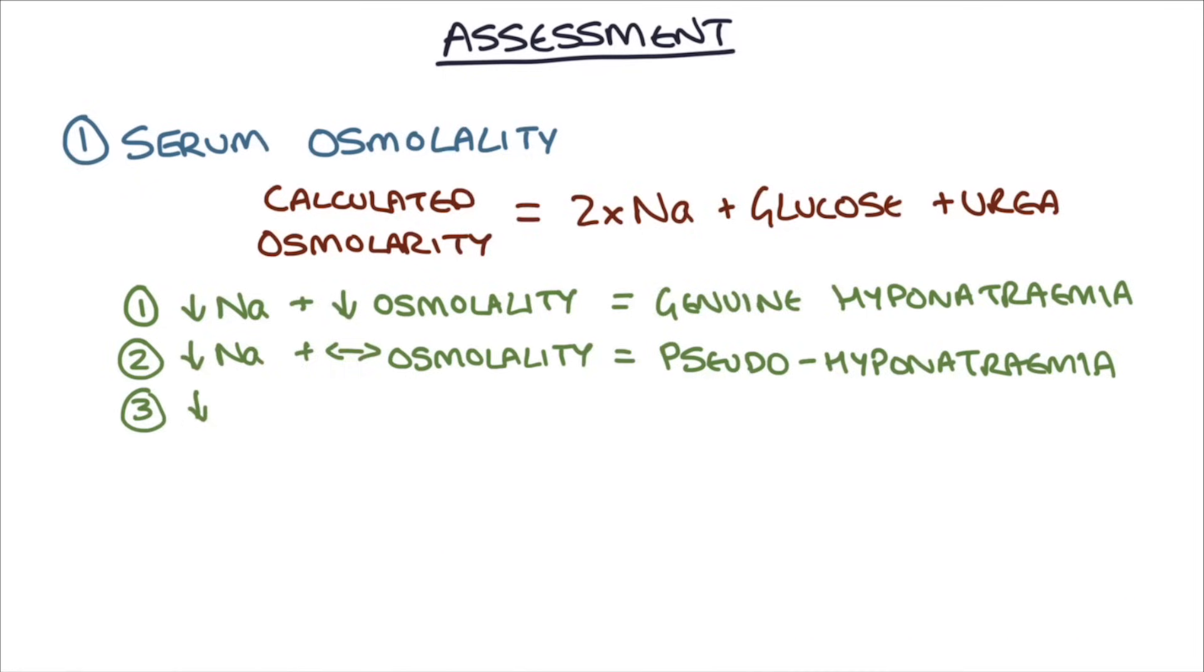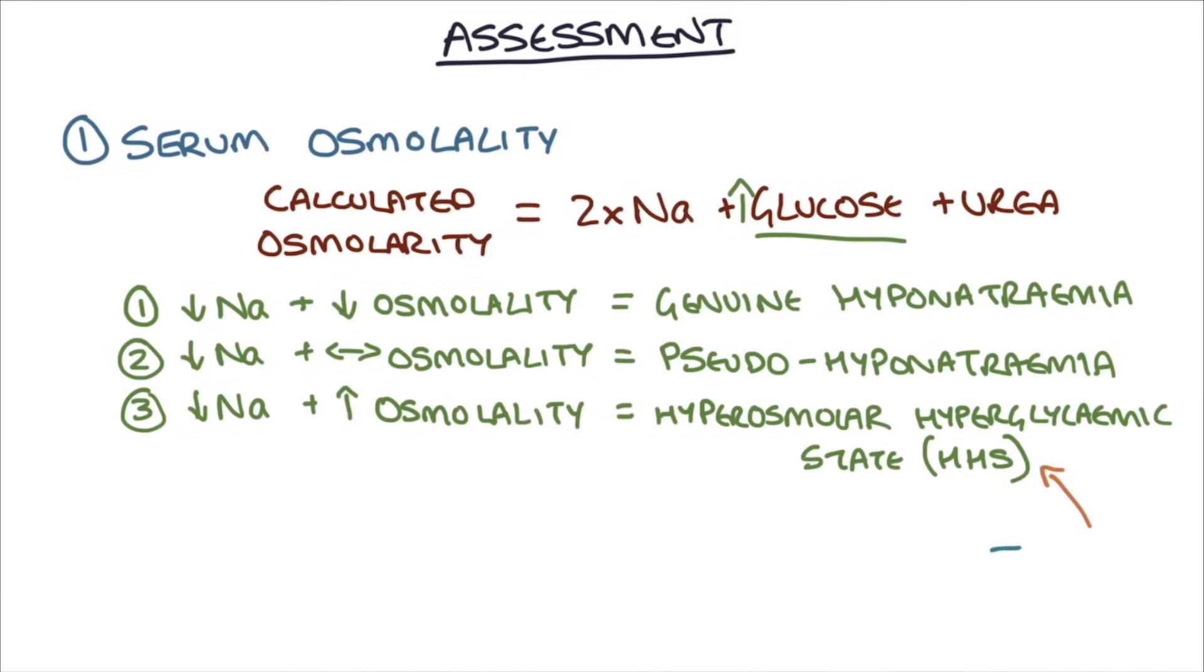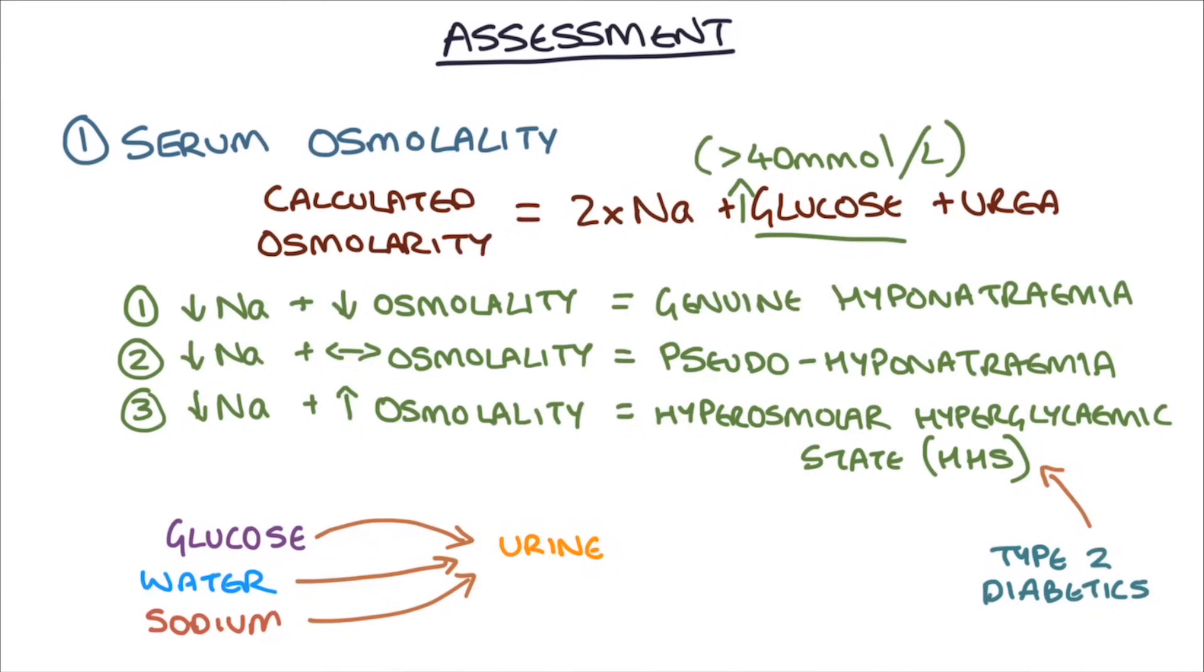If the patient has a low sodium but a high osmolality, this is usually caused by a very high level of glucose in a condition called hyperosmolar hyperglycemic state, or HHS, which occurs in type 2 diabetics. The blood level of sugar goes up very high, for example, over 40 millimoles per liter and above. Glucose leaking into the urine causes water and sodium to follow, resulting in dehydration and further concentrating the glucose in the blood. Having a high glucose level in this equation leads to a high osmolality, but the sodium might be normal or low.